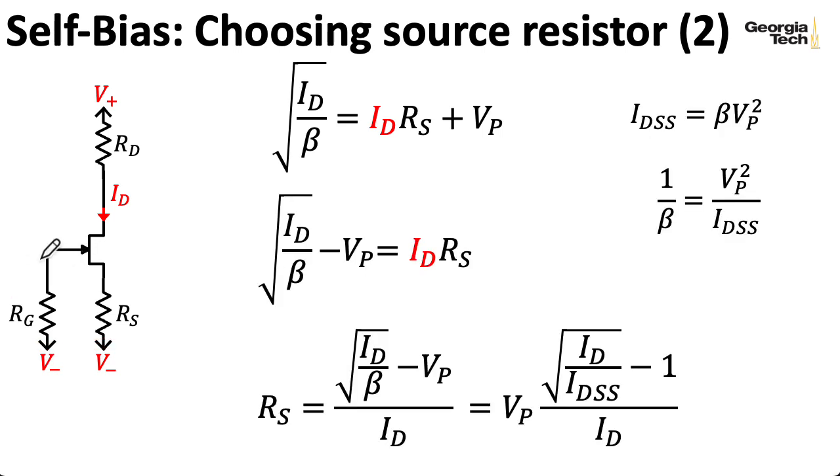Now if you want, you can get rid of the input altogether, and just use this as a current source. And if you do that, you can get rid of this resistor. And then you can pick a resistance to give you whatever current you want. The biggest current you can get is IDSS. And you get that by getting rid of the source resistor here.